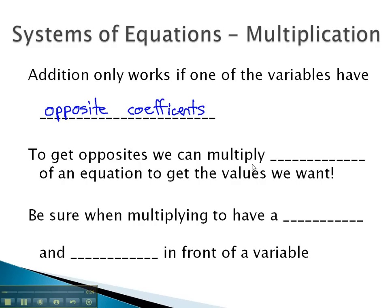So that means we may have to get opposites, and to do so, we can multiply both sides of an equation to get the value we want.